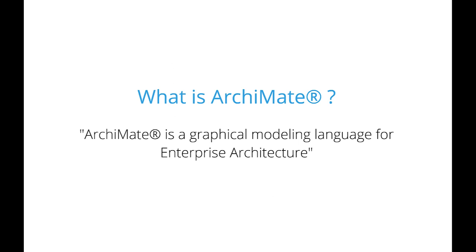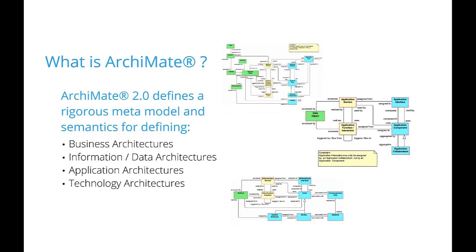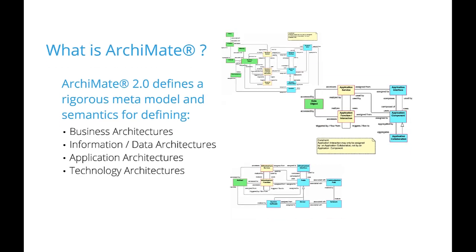What is Archimate? The Open Group say quite simply that Archimate is a graphical modeling language for enterprise architecture. And why is it more significant than that to solution architects? What we see in Archimate is a build-out — an elaboration of the TOGAF architecture content metamodel — that gives solution architects more power and flexibility to define business architectures, information data architectures, application architectures, and technology architectures, with a more rigorous and completely defined metamodel and semantics, especially around relationships.